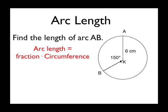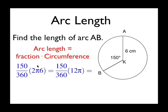We want a fraction of the circumference in order to find the arc length. So in this case the fraction that we want is 150 over 360. The circumference 2πr is 2π times 6 or 12π.